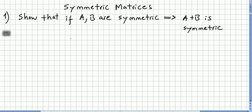So the very first one is show that if A and B are symmetric matrices, it means that A plus B is also symmetric. The proof is really simple.